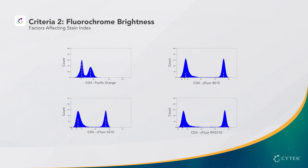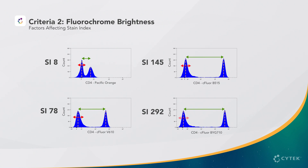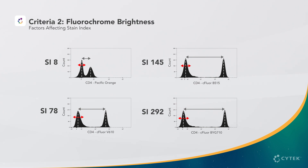We can see here the visual differences in stain index across different fluorochromes on human PBMCs stained with CD4 antibody. The green arrows show the separation between negative and positive populations, and the red arrows show the spread of the negatives. Pacific Orange shows the least separation with the lowest stain index, while Seafloor BYG710 is much brighter, exhibiting the most separation and highest stain index.